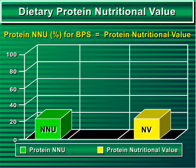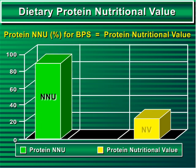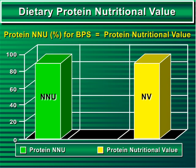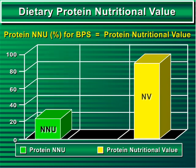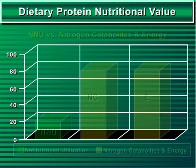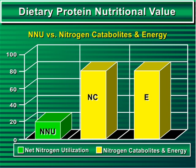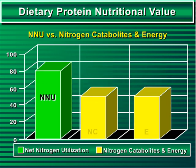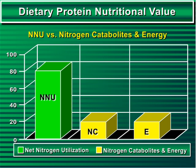A protein's NNU for body protein synthesis represents its nutritional value. Thus, the higher its NNU, the higher its nutritional value. On the contrary, the lower its NNU, the lower its nutritional value. Meanwhile, a protein's NNU is inversely proportional to the amounts of nitrogen catabolites and energy that it releases. Therefore, the higher a protein's NNU, the lower its released amounts of nitrogen catabolites and energy.